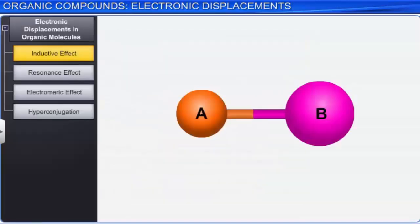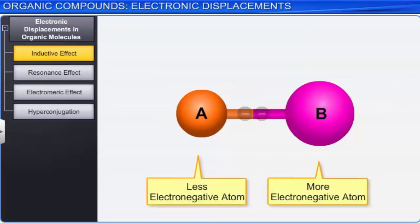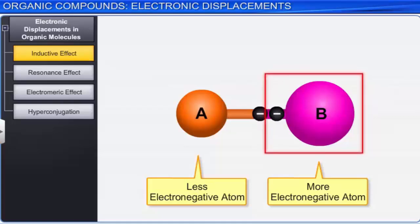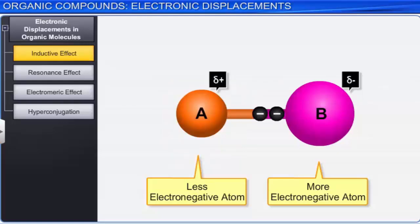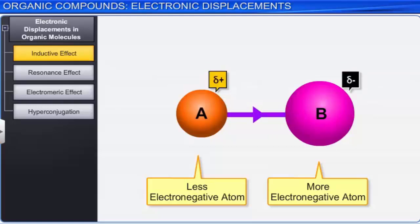In the case of a covalent bond between two atoms of different electronegativity, the electron density shifts more towards the more electronegative atom. This electron shift polarizes the covalent bond, leading the more electronegative atom to acquire a partial negative charge and the less electronegative atom to acquire a partial positive charge. The fractional electronic charges in a polar covalent bond are denoted by delta positive and delta negative, and the shift of electron density is shown by an arrow pointing from delta positive to delta negative end.